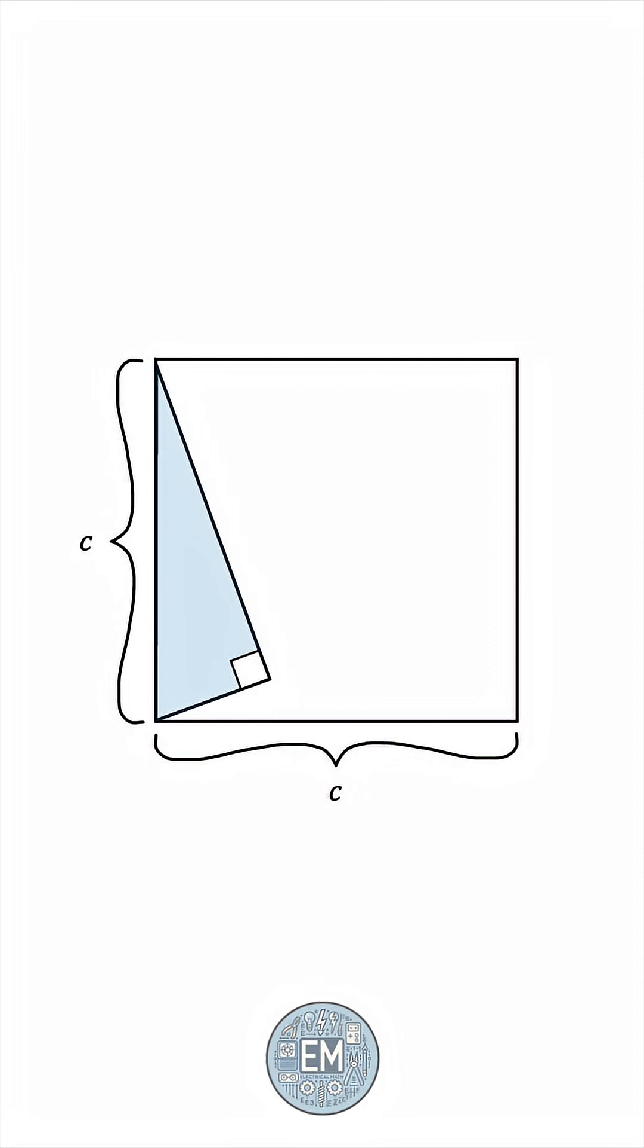Say the triangle has legs A and B. We'll now take a copy of this triangle and align its hypotenuse with the opposite side of the square. We'll do the same thing for the upper side, like this, and finally the lower side, like that.